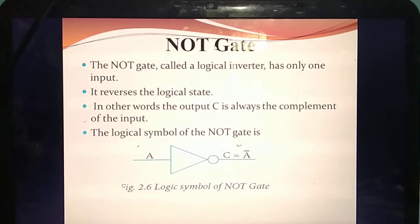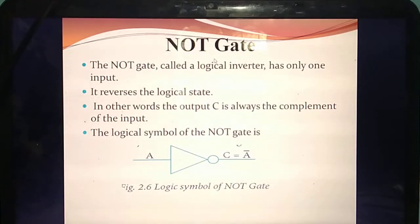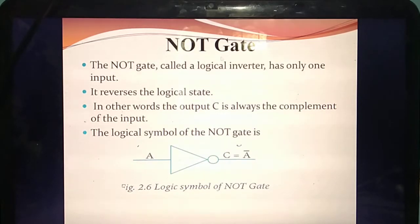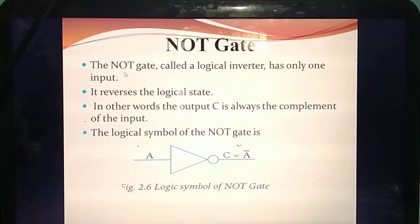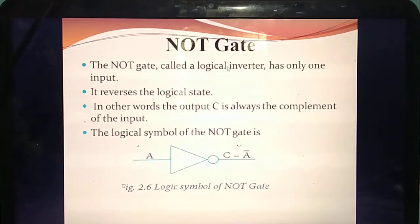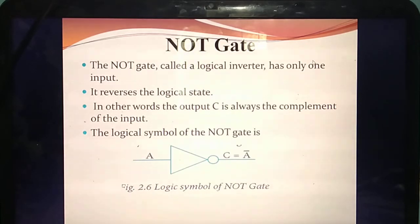Next we are going to study about NOT gate. The OR gate is called logical inclusive OR. Likewise, the NOT gate is called a logical inverter. Inverter means you get the opposite answer. The NOT gate always has only one input. Remaining all the gates have two inputs A and B, but the NOT gate always has only one input.